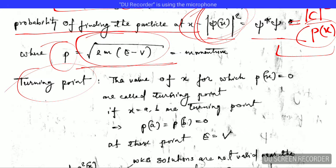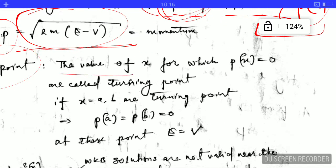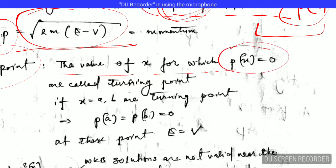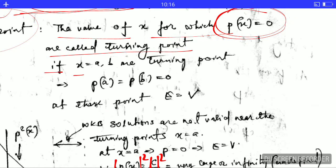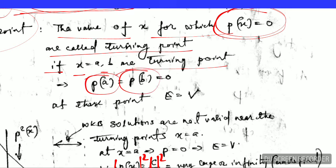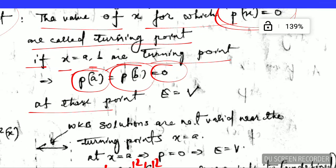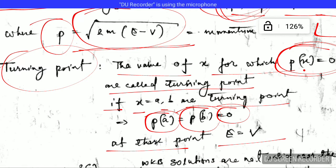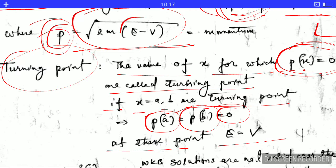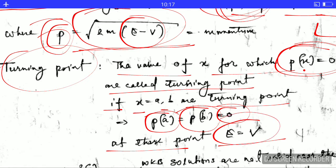Now let's come to the turning points. The values of x for which p(x) equals zero are called the turning points. If x = a and x = b are the turning points, then p(a) = 0 and p(b) = 0. At these points, the total energy E equals the potential energy V, as you can directly see from the expression for p: if p = 0, then E − V must equal zero, giving E = V.